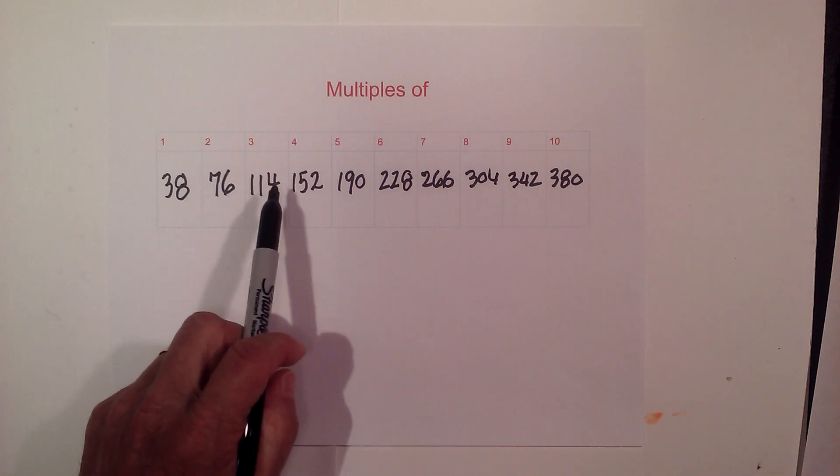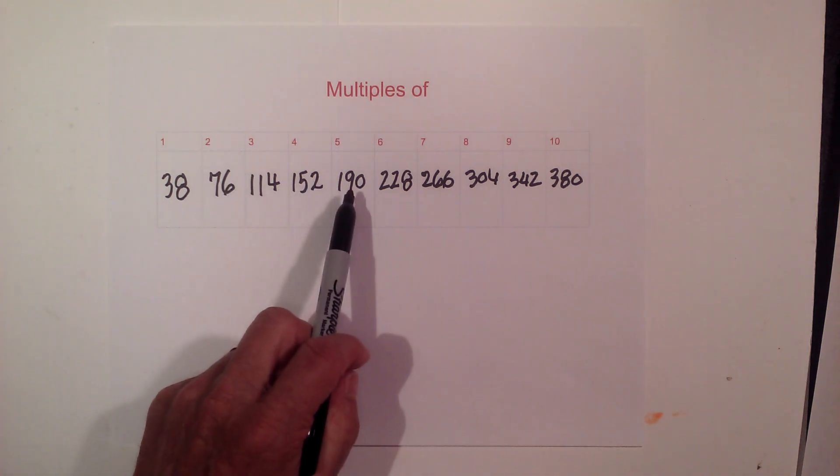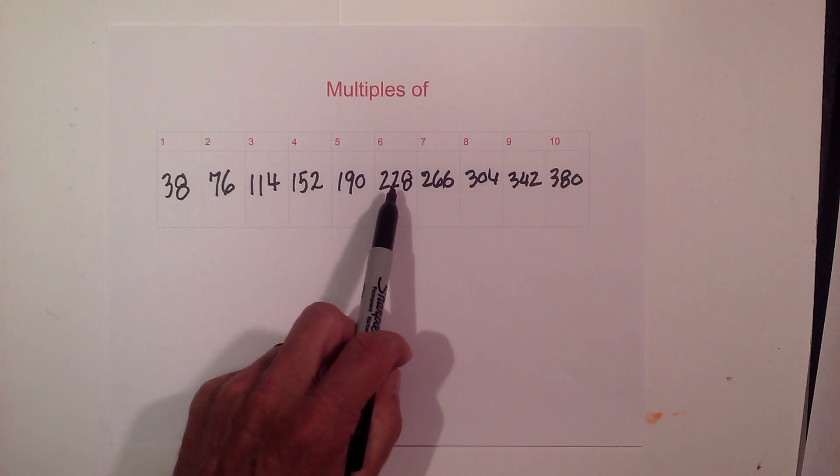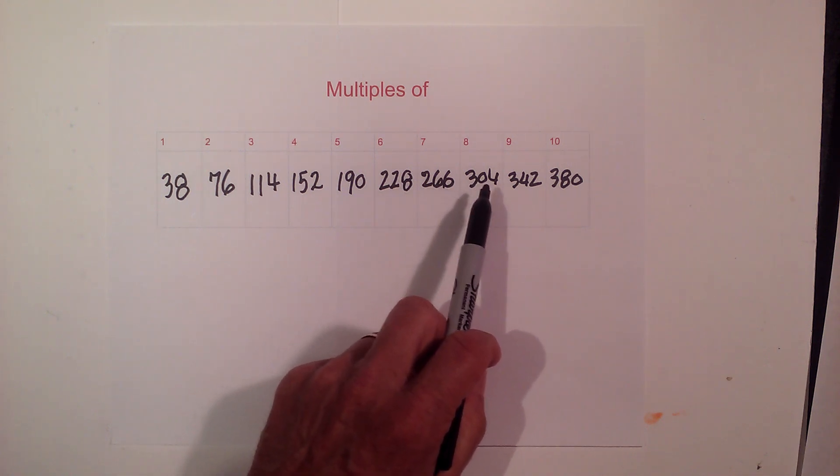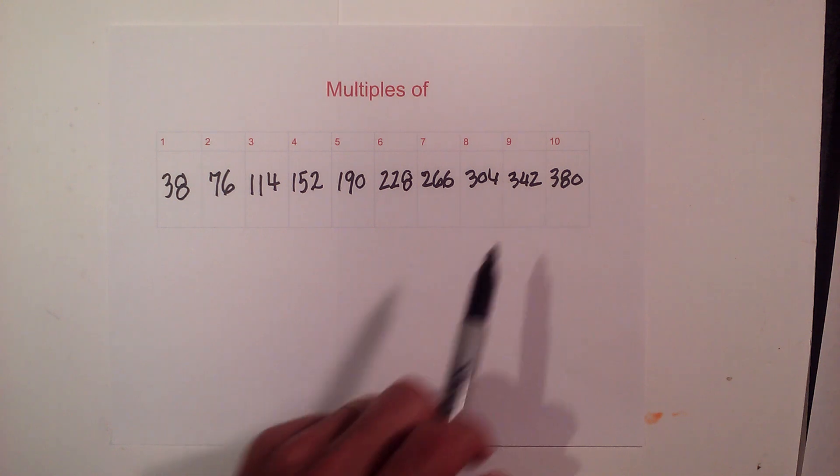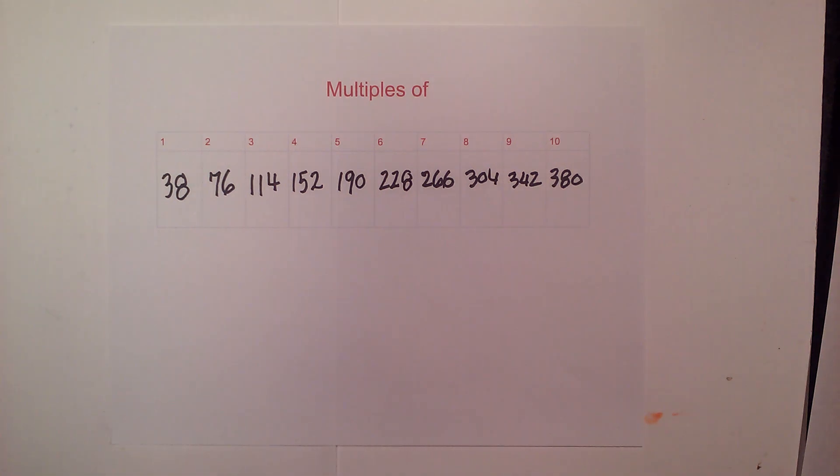76, times 3 is 114, times 4 is 152, times 5 is 190, times 6 is 228, times 7 is 266, times 8 is 304, times 9 is 342, and then 380. Thanks for watching, and Movie Math uploads a new math or science video every day.